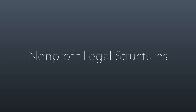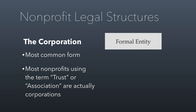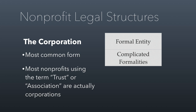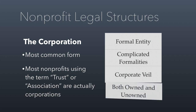There are different kinds of legal entities that nonprofits can carry out their activity through. The nonprofit corporation is the most common form — in fact, many nonprofits that use the title 'trust' or 'association' in their name are actually corporations, even though trusts and associations are legally different. These are formal legal entities that can own property and be sued. They have complicated formalities to maintain, but they benefit from the corporate veil, so personal assets are protected. They can be owned — regular corporations — or unowned, like nonprofit corporations.